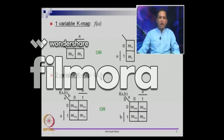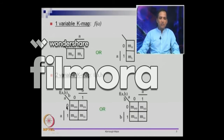If you want a two-variable K-map, we have f(a, b). In this case, the possible values of a are listed in the rows and the possible values of b are listed in the columns. We go in the order 0, 1 for both. So 0,0 corresponds to min term 0; 0,1 corresponds to min term 1; 1,0 corresponds to min term 2; and 1,1 corresponds to min term 3.